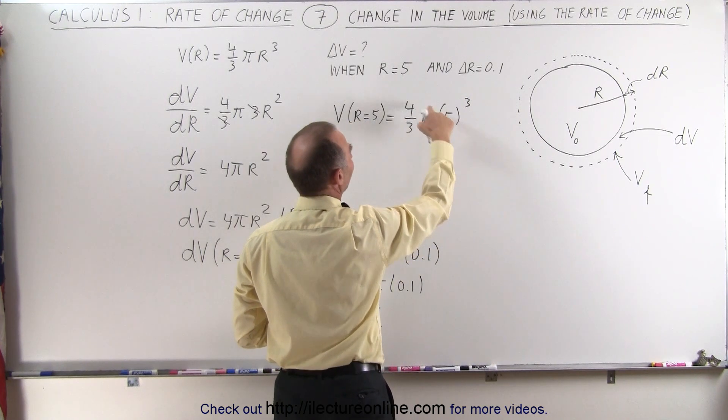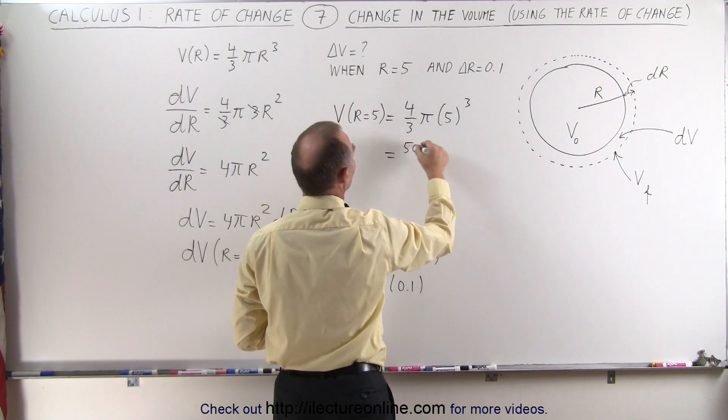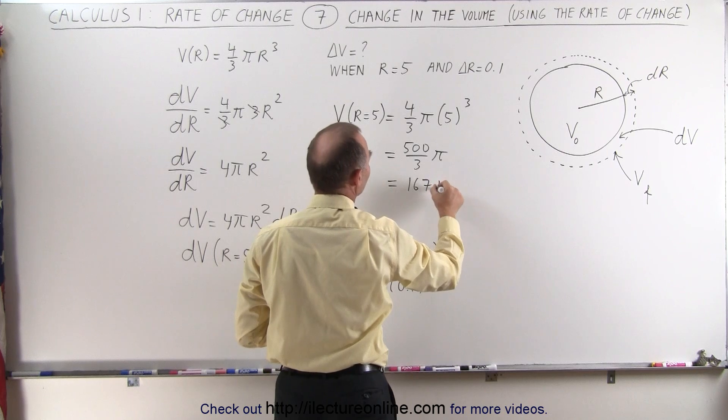Now 5 cubed is 125 times 4 would be 500 divided by 3. So this is 500 divided by 3 pi, which is about 167π.